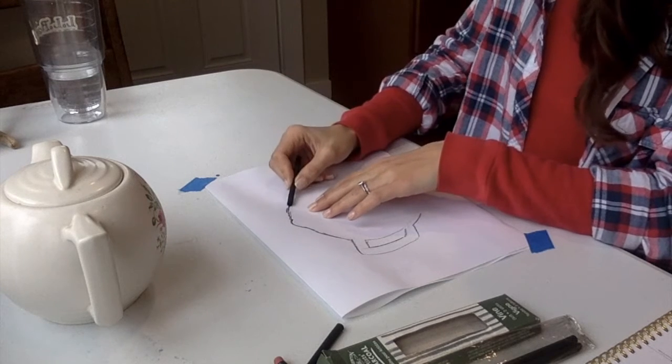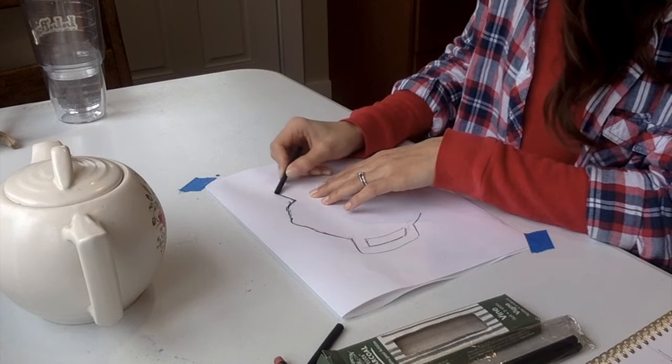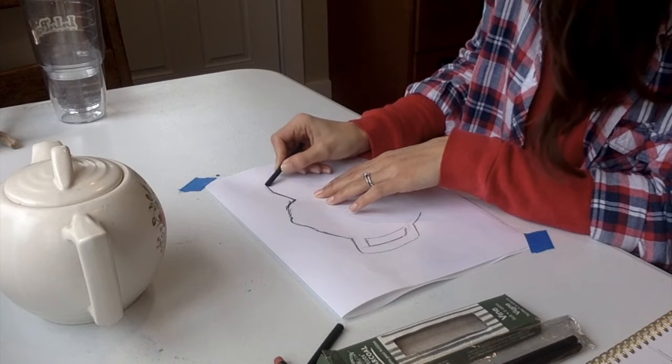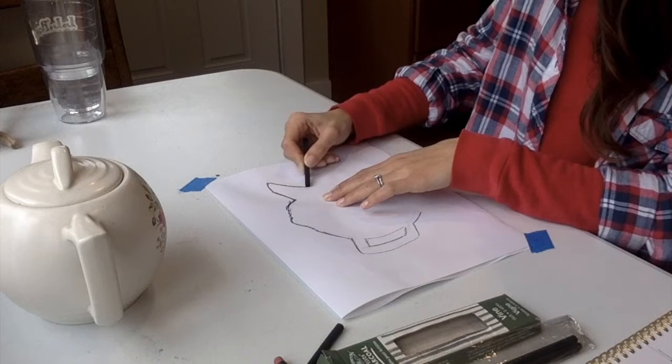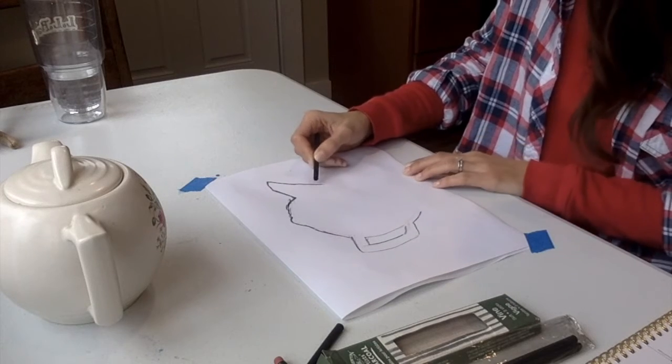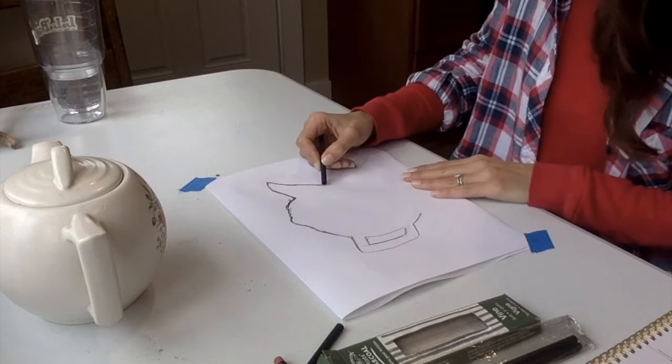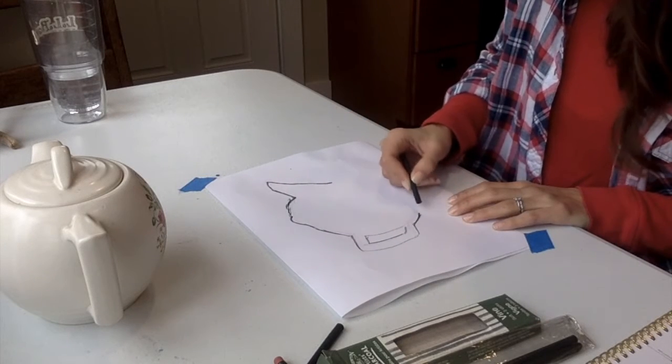And again, I'm looking at that space around my teapot and not at the details of the teapot itself. And remember, we don't want to draw anything actually on the teapot or on your object, because we're not really going to be focusing on that at all.